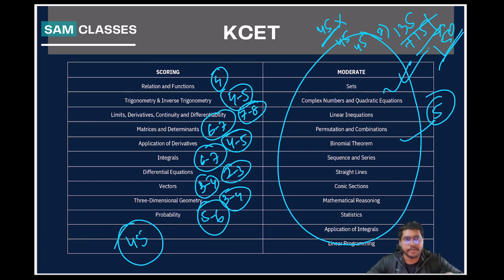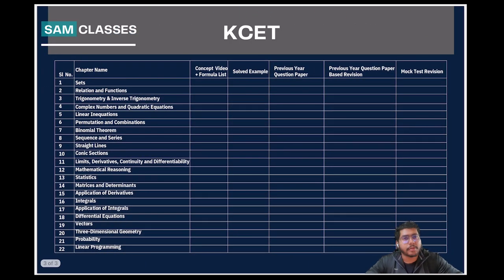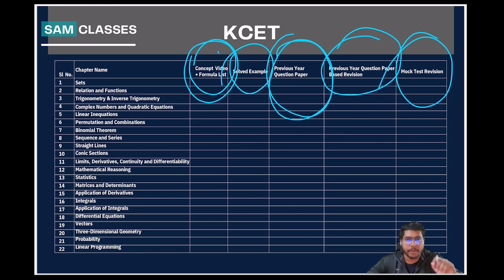It doesn't matter what you have or haven't done — what matters is whether you want to be in a good college. Previous year students came for a 30-day crash course scoring around 60,000 to 70,000 rank with marks of 30 to 35, and they brought it to 120 to 125. You have even more time now. The course provides concept and formula sessions, solid examples, ample practice, previous year questions, and chapter-wise and full mock tests to enhance your speed.